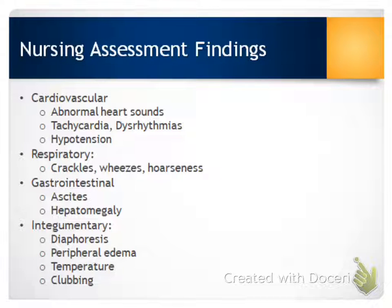When we look at patients who have valve disorders, there will be specific signs and symptoms depending on whether they have mitral valve stenosis or aortic valve stenosis — these differ. Some general assessment findings include abnormal heart sounds such as murmurs, tachycardia or dysrhythmias, and hypotension.